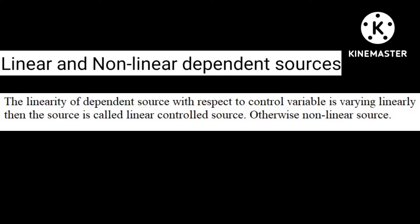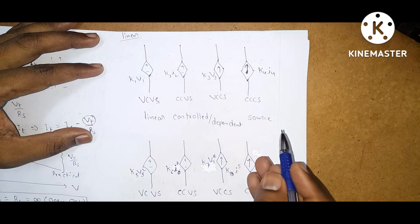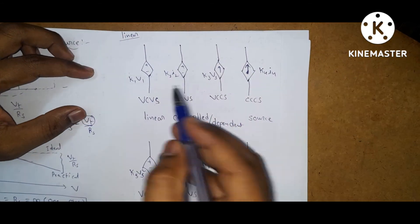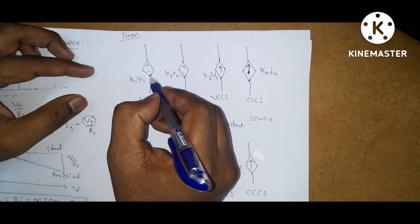Next: linear and non-linear dependent sources. If the linearity of a dependent source with respect to its control variable varies linearly, then the source is called a linear controlled source; otherwise it is a non-linear controlled source.